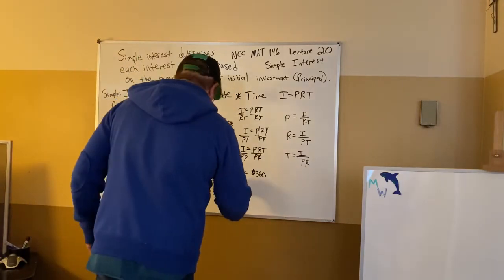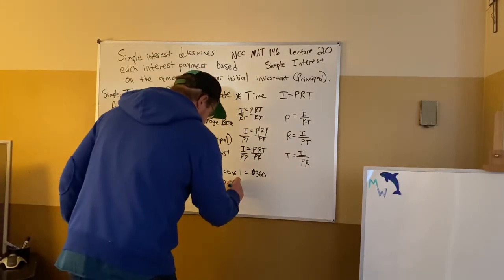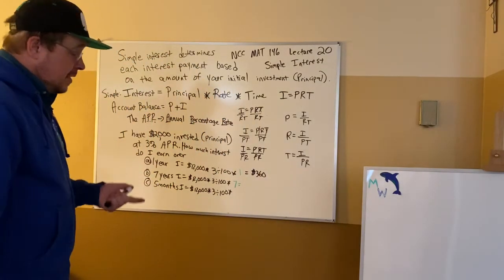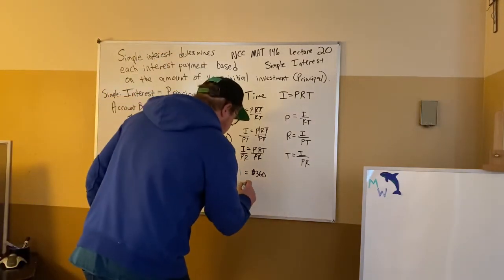Now on this one they have 7 years. So it's going to be the same multiplication but it's going to be 7 times as much. And it's going to be $2,520 but it takes me 7 years to get there.